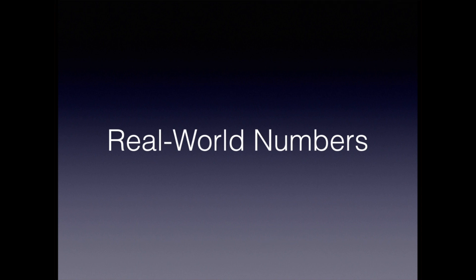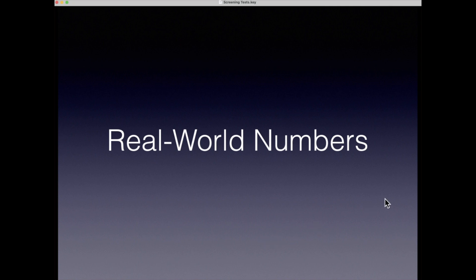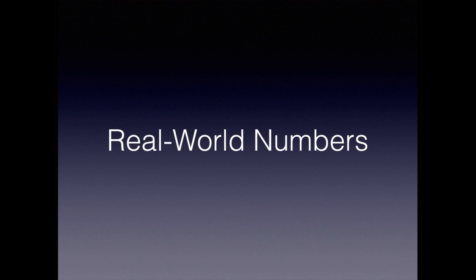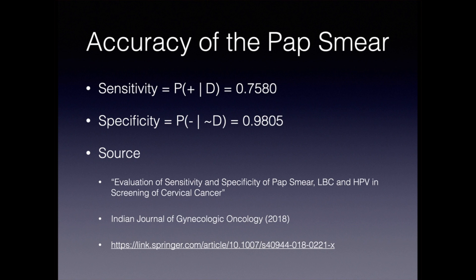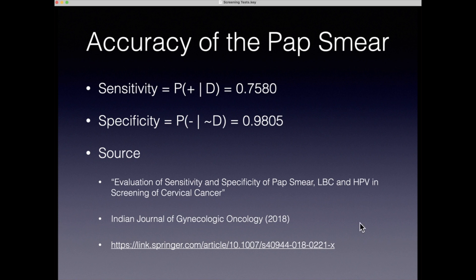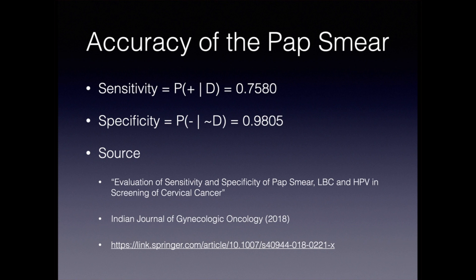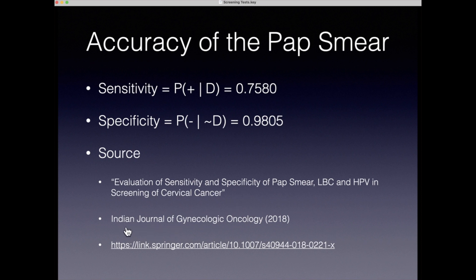Now let's look at some real-world numbers for this situation. We're going to use actual pap smear test data along with real-world prevalence information — not made-up data. The source comes from a paper published in 2018 in the Indian Journal of Gynecological Oncology. The title was 'Evaluation of Sensitivity and Specificity of Pap Smear, LBC, and HPV in Screening of Cervical Cancer.' You could look this up if you'd like.